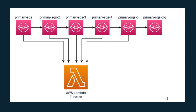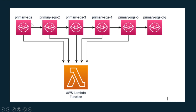Here you can see the primary SQS where you are getting messages from your publisher. This is the primary queue, and you have a Lambda function listening to it. I have not set up retries — if a message fails for any reason it moves directly to a DLQ. I have set primary SQS 2 as the DLQ for the primary SQS.